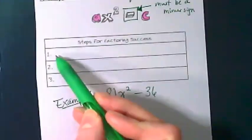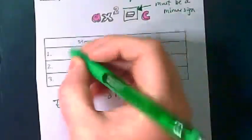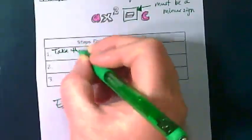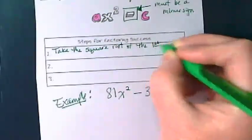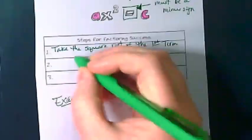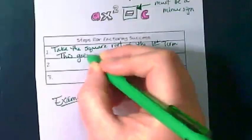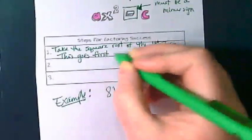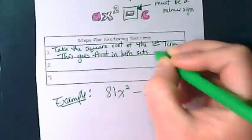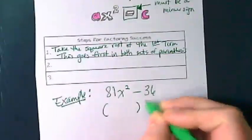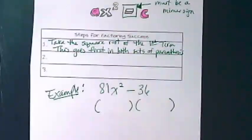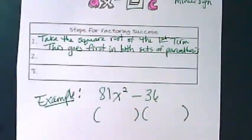We're going to write small enough to get two things going across. The first step is to take the square root of the first term. This goes first in both sets of parentheses.